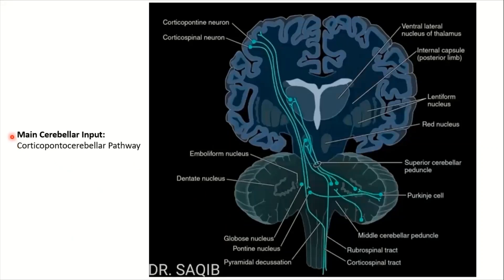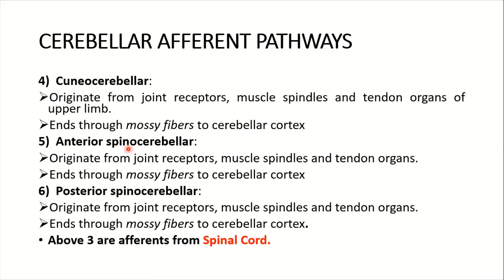The most important and main cerebellar input is via the corticopontocerebellar pathway. This is shown in the picture — a very clear picture. The corticopontine neuron lies here in the cortex of the cerebrum, and the fibers go down to the pontine nuclei, crossing to the opposite side and reaching the cerebellar cortex. Pathways number four, five, and six are coming from the spinal cord.